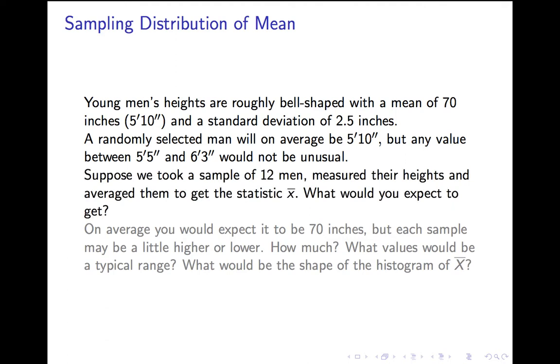Now I want to change the probability experiment. Suppose I take a sample of 12 men, I measure all their heights, and average them to get the sample mean x-bar. What kind of numbers would I expect to get when I do that? On average, I think it's pretty reasonable, I would expect to get 70 inches. But each sample might give you an x-bar a little higher or a little lower than that. How much? What values would be typical? What would be the shape of the histogram of that random variable, x-bar, gotten by choosing a sample and computing its x-bar?